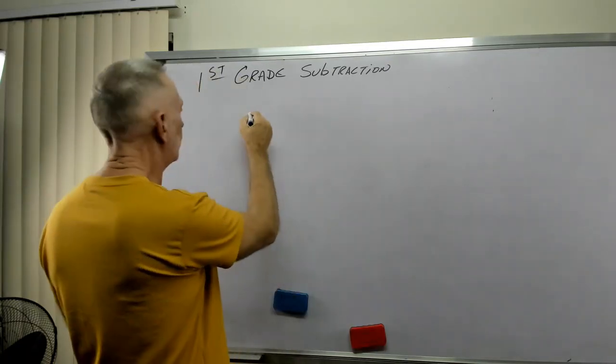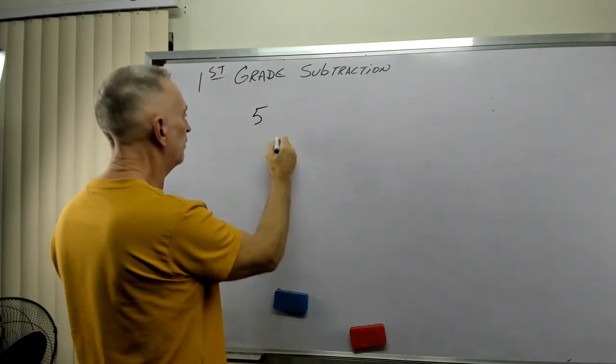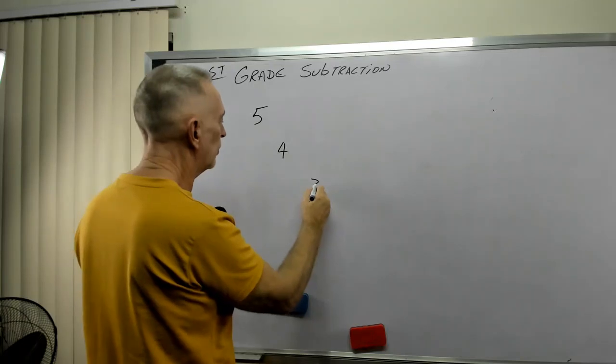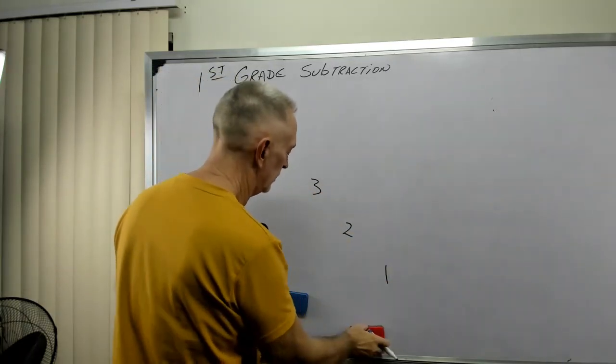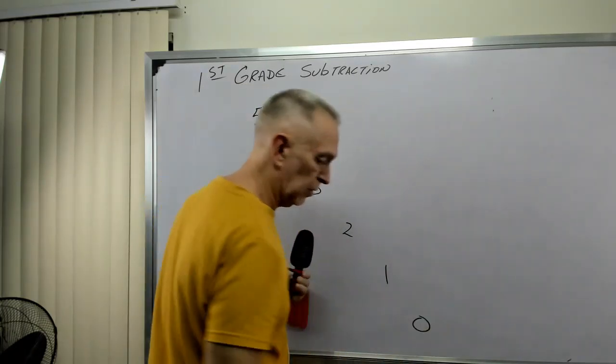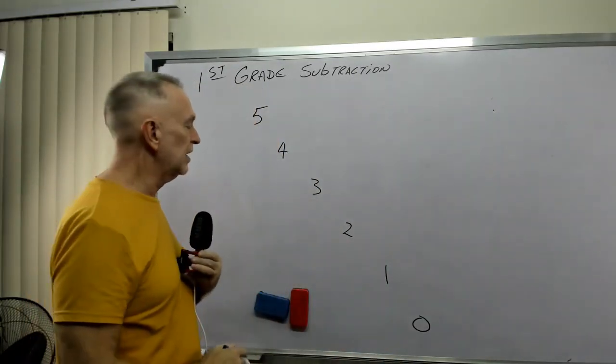If we count backwards, five, four, three, two, one. What about Mr. Zero? Whoa. Let's practice that one.